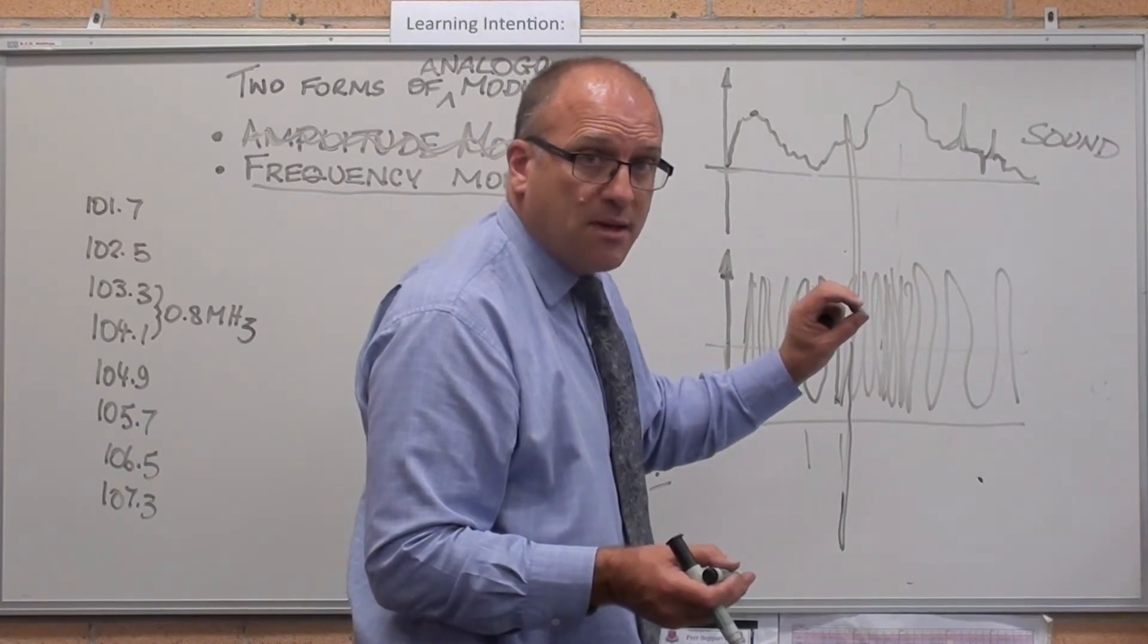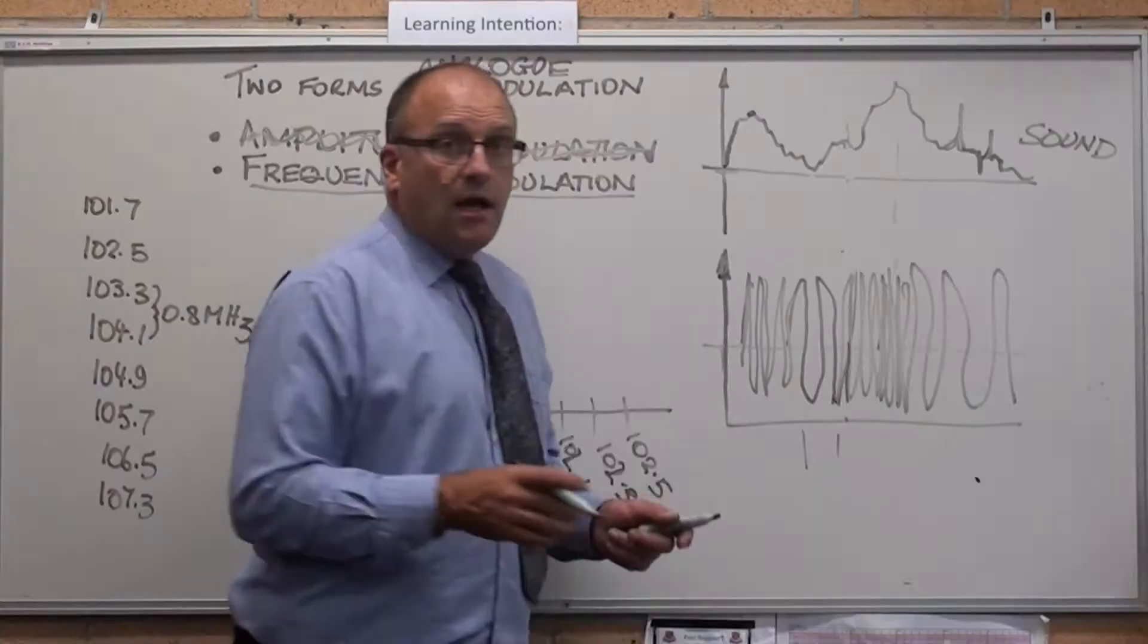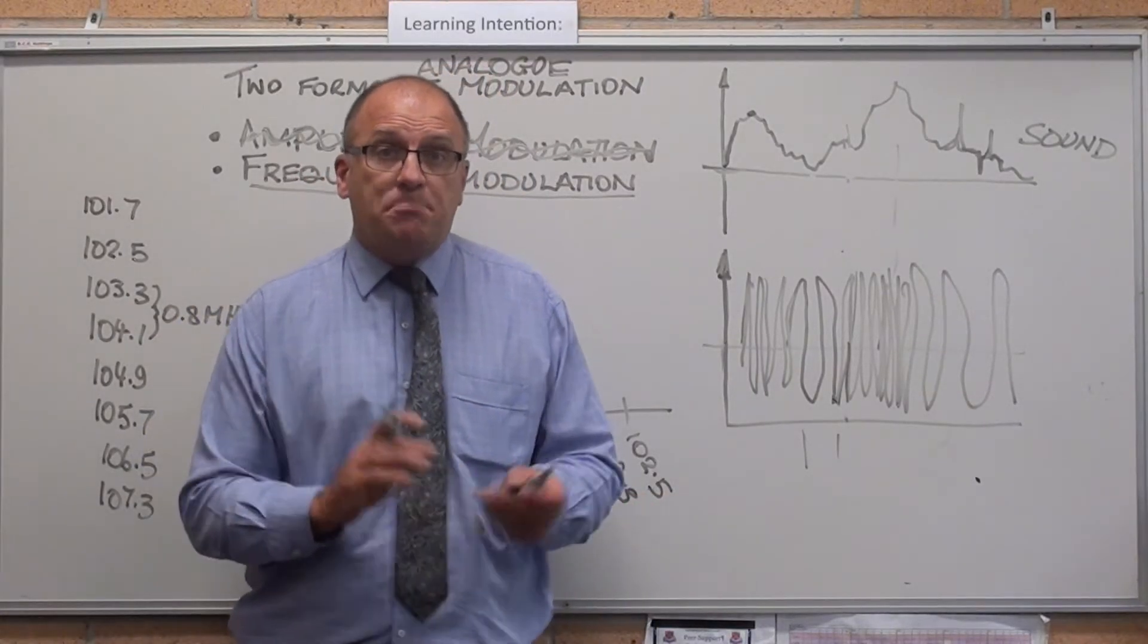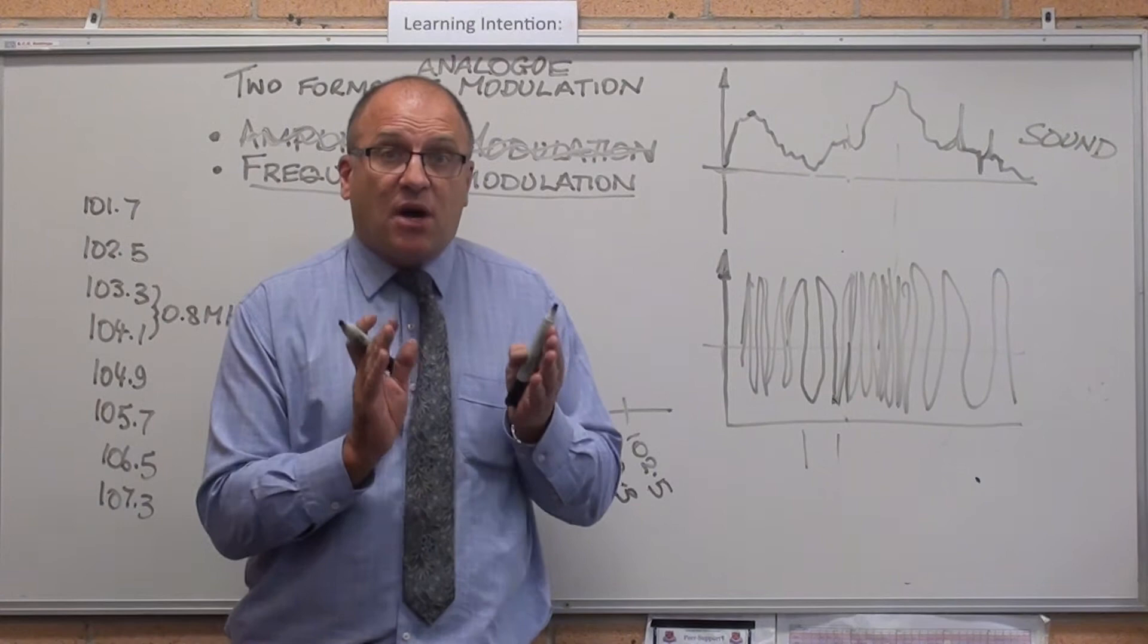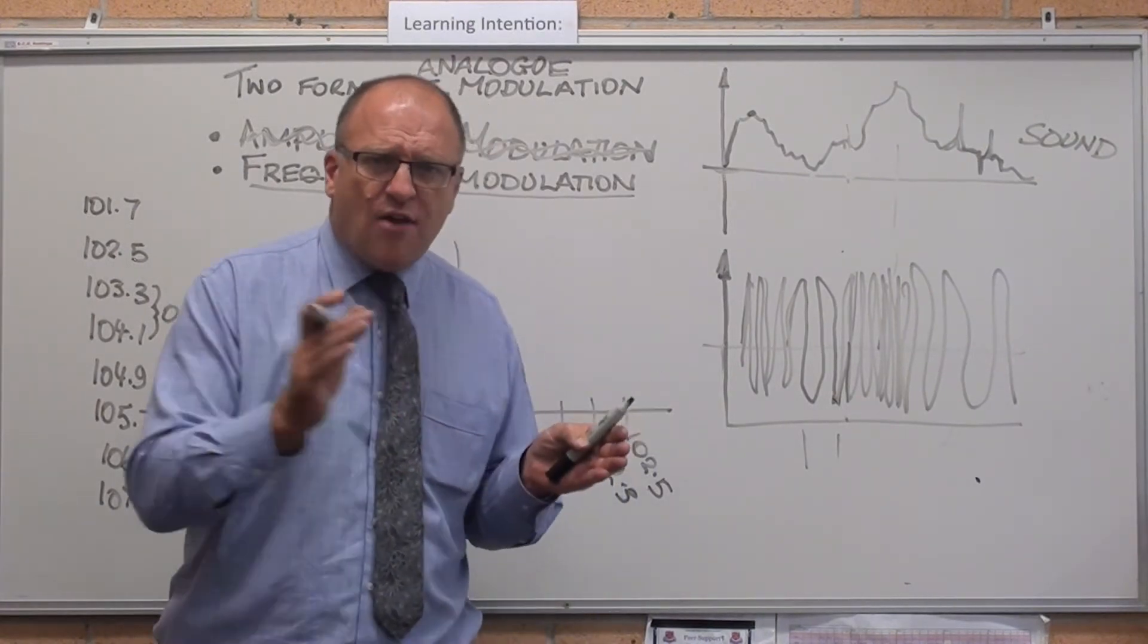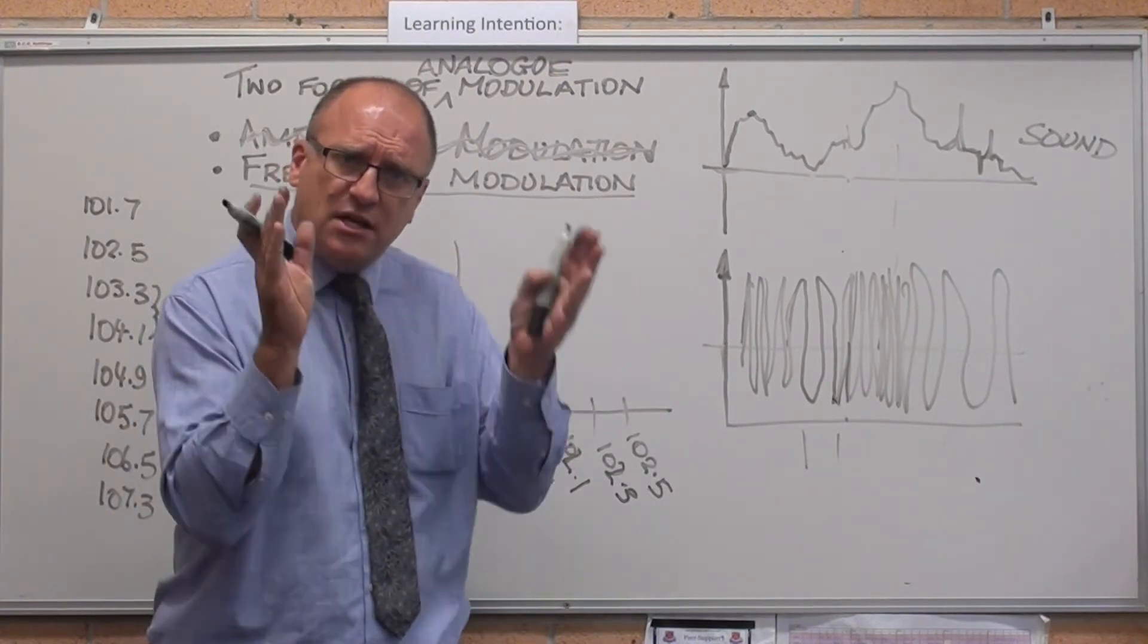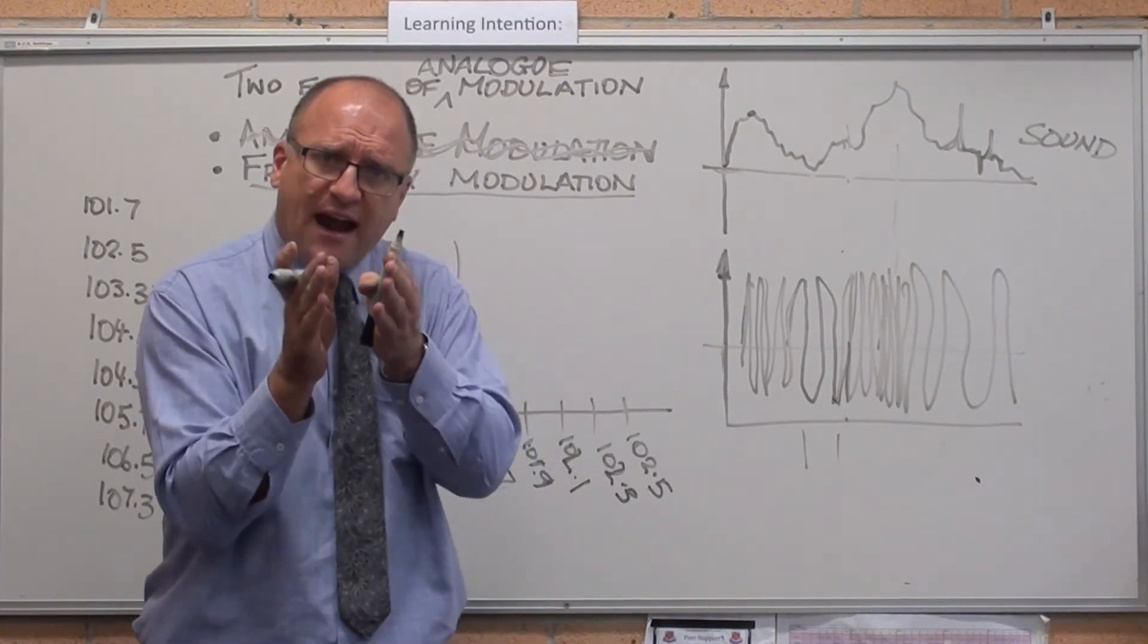The other one is it's able to be broadcast in stereo. So FM works by modulating the frequency, by changing the frequency. Which means it broadcasts over a range of frequencies. And you've got to have your radio station tuning to a range.